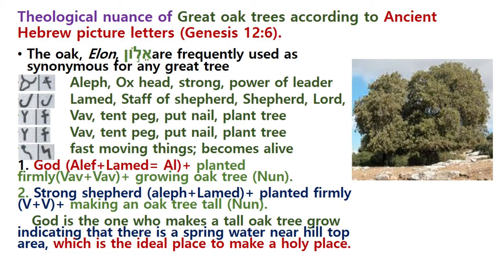Number two: strong shepherd. The meaning of 'El' could be interpreted as strong shepherd, strong God. Aleph plus Lamet becomes El or Al. Vav means planted firmly, and then Nun — making an oak tree tall, making the oak tree grow tall. So the meaning of El is this: God is the one who makes the tall oak tree grow.